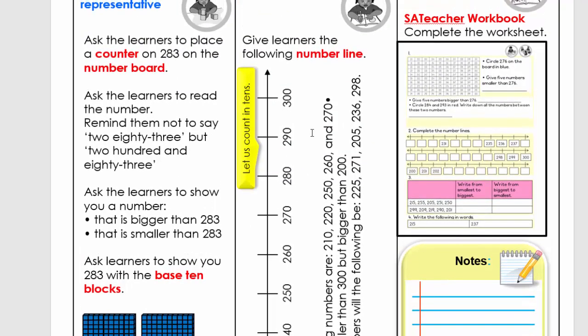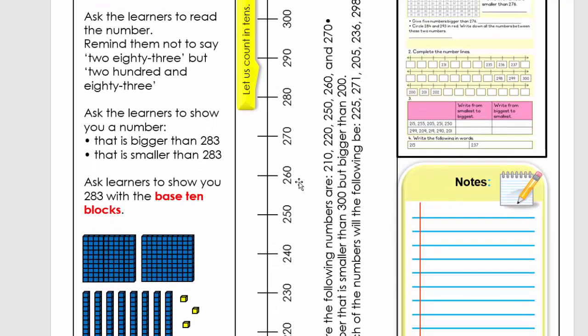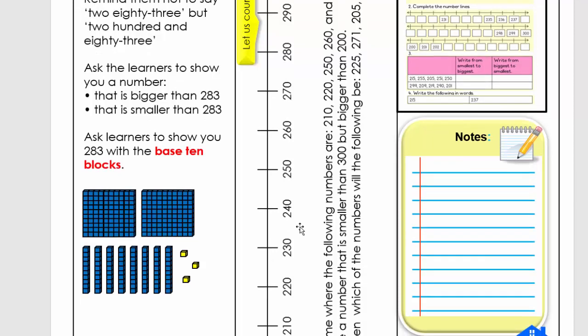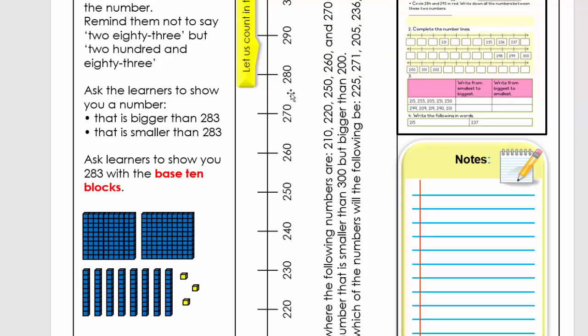On your representative level, you can also write these numbers on a number line from 200 to 300, counting in tens, and ask them to identify the numbers. You can also point to certain of these numbers and ask which number is bigger and which number is smaller. If I've got 220 and I need to count to 300, how will I count in tens?